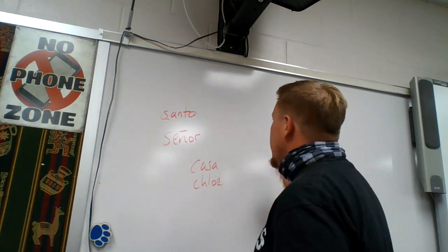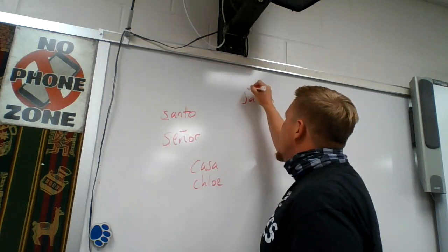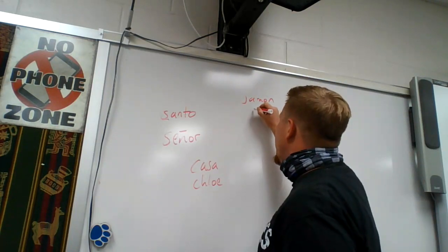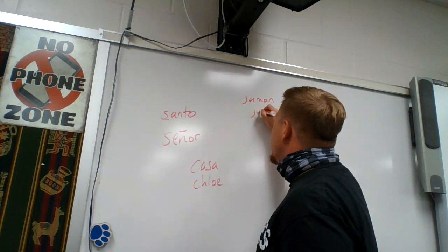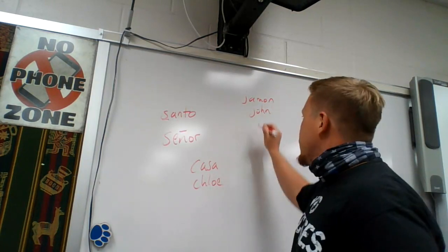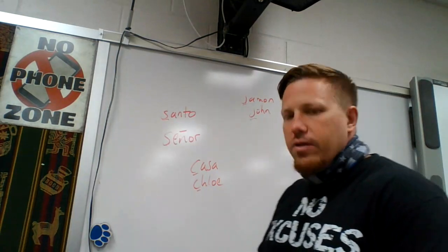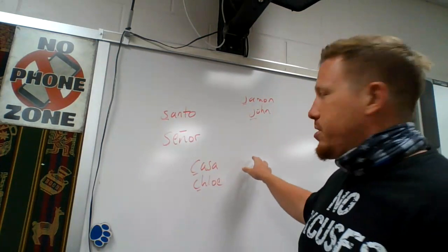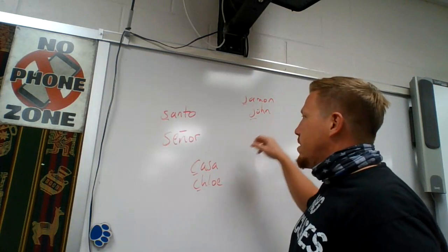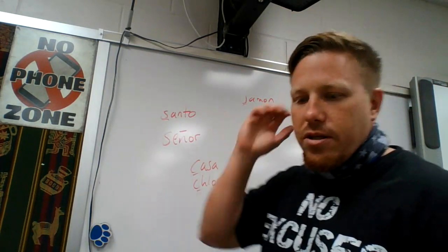We have Hamon — lots of Hamon, lots of hams. Hamon John. So that's what you want to do. The letters match: J for John, C for Chloe. But don't just stop there — make sure you know what that word means. Hamon is Ham, Santo is Saint, and Casa is house — Casa Chloe.